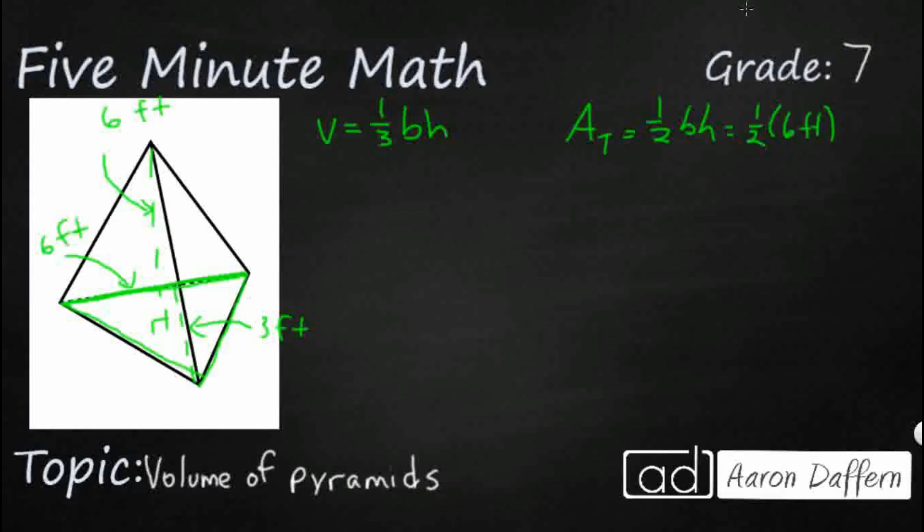And it's got its own little height right here, because it's not a right triangle. That's 3 feet. So that is going to equal, that's one-half times 6. That just makes 3 times 3. So that's going to make 9 feet squared.